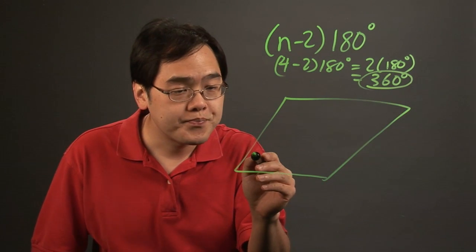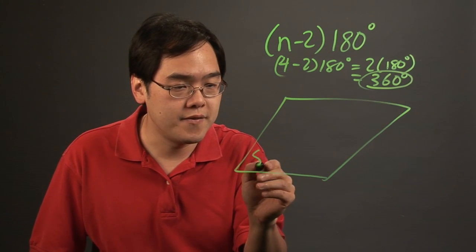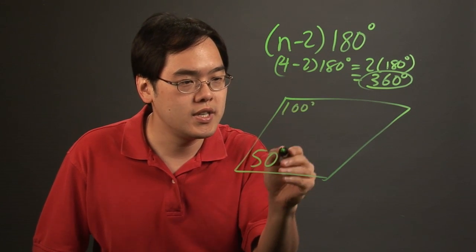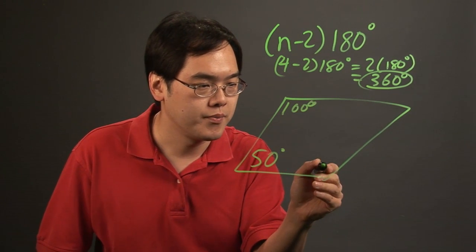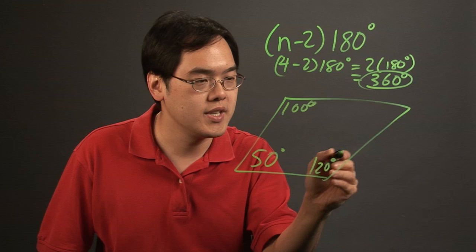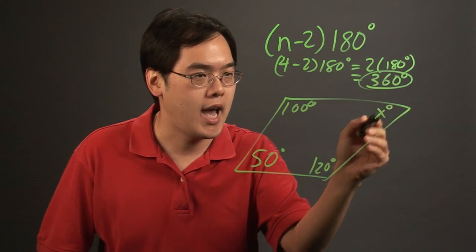So for example, if this was 50, if this was 100, and if this was 120 degrees, and then you want to find out what x happens to be,